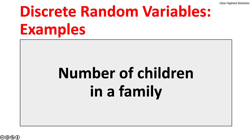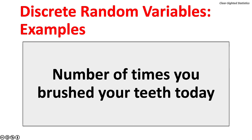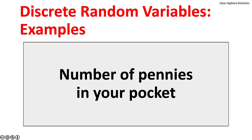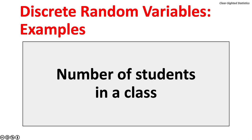Examples of discrete random variables include the number of children in a family, the number of times you've been on a subway today, the number of times you brushed your teeth today, the number of pennies in your pocket, the number of spam phone calls you received this week, and the number of students registered for a class.